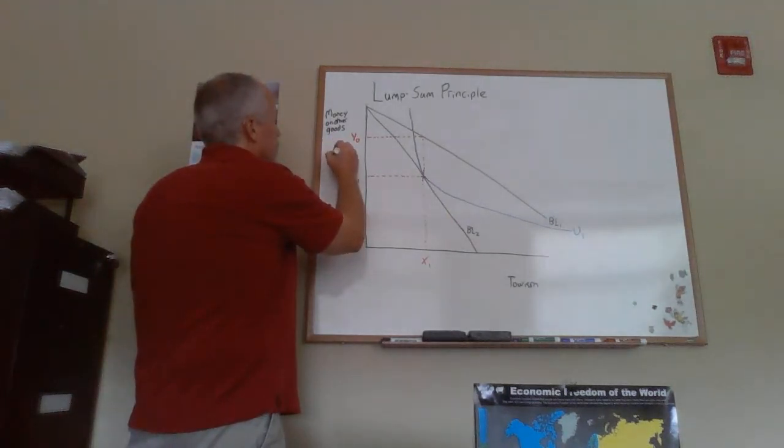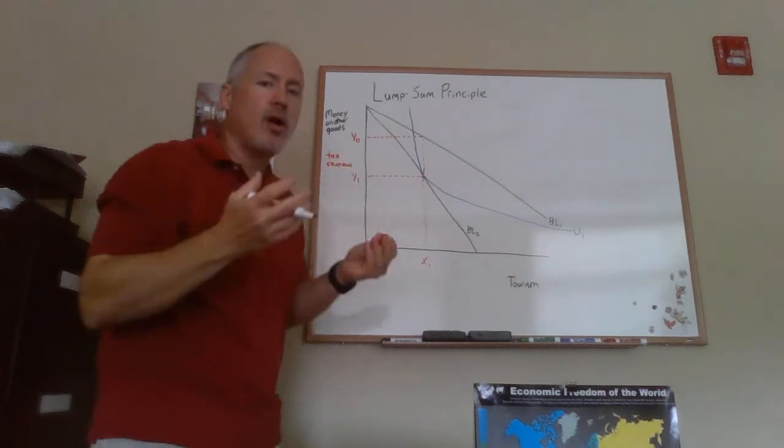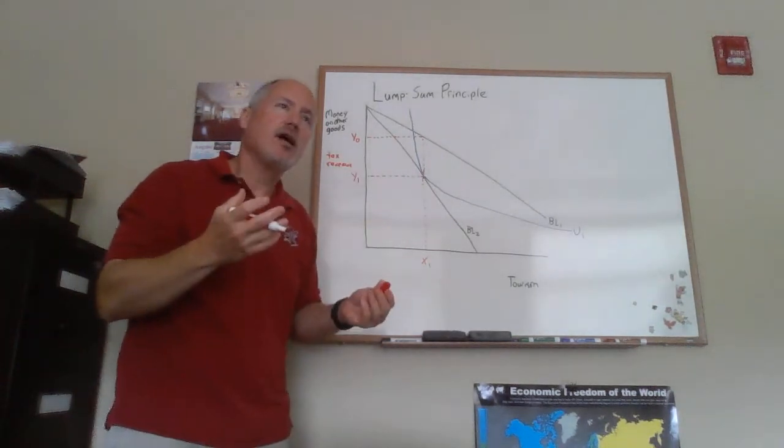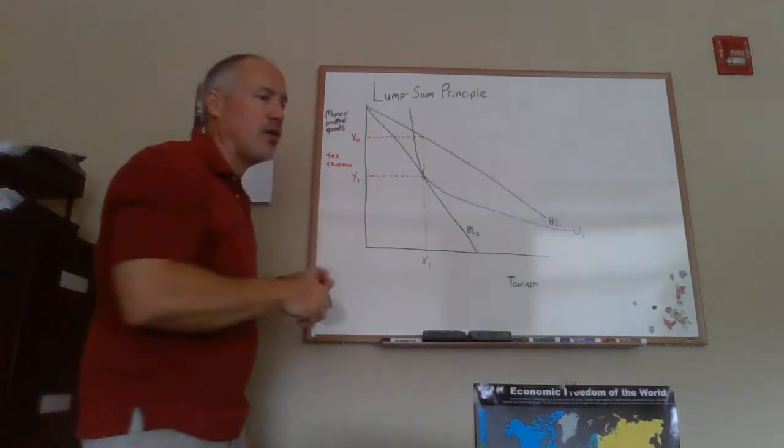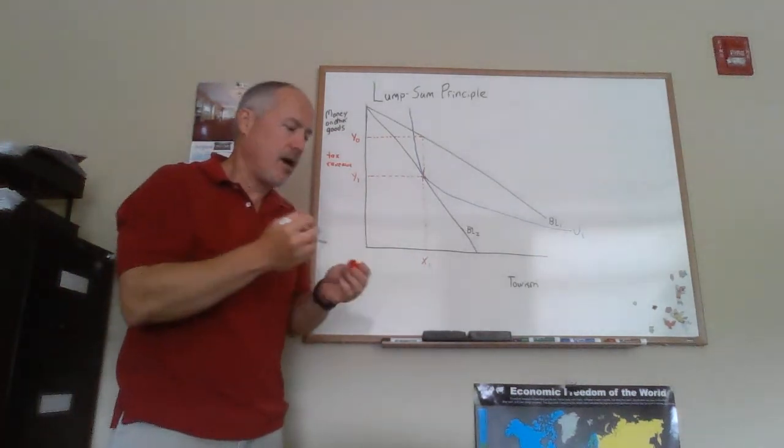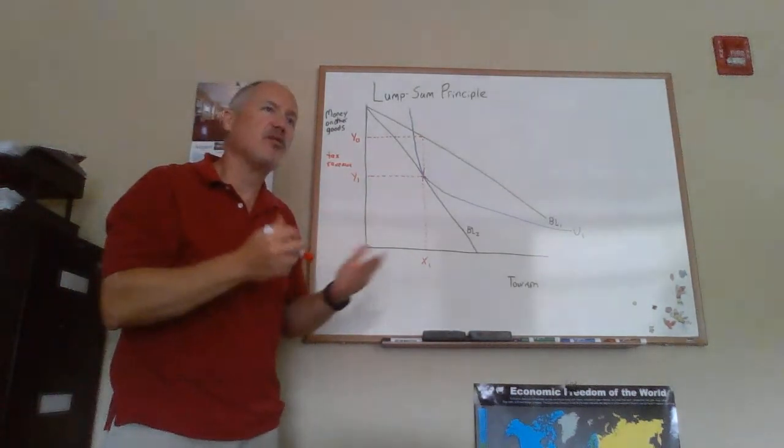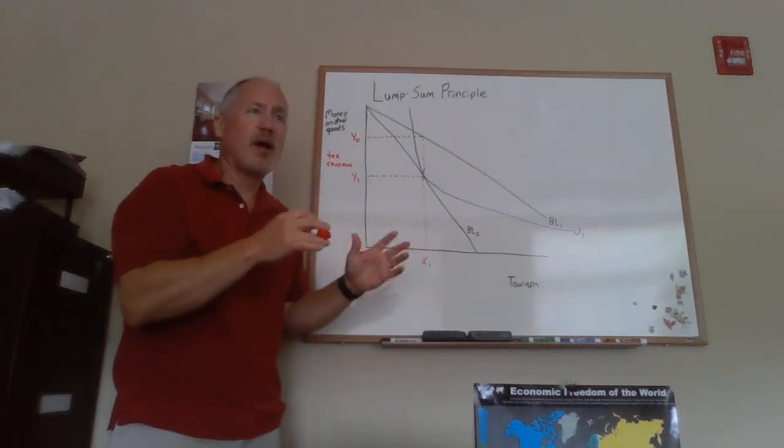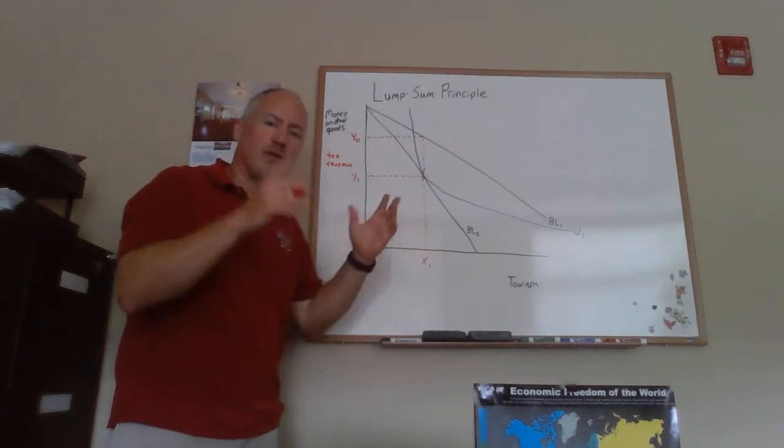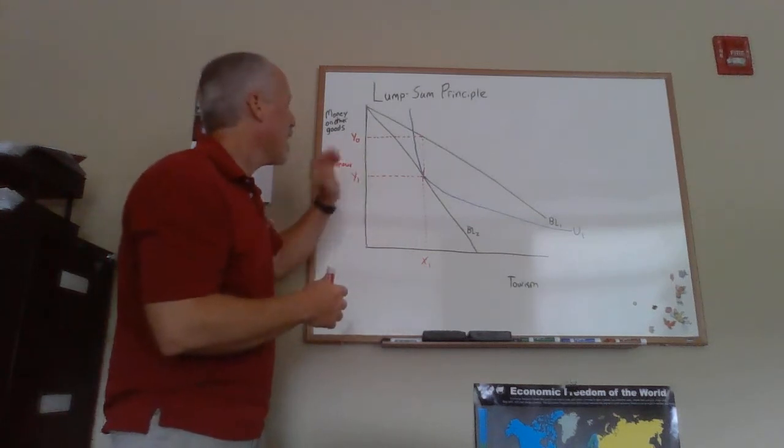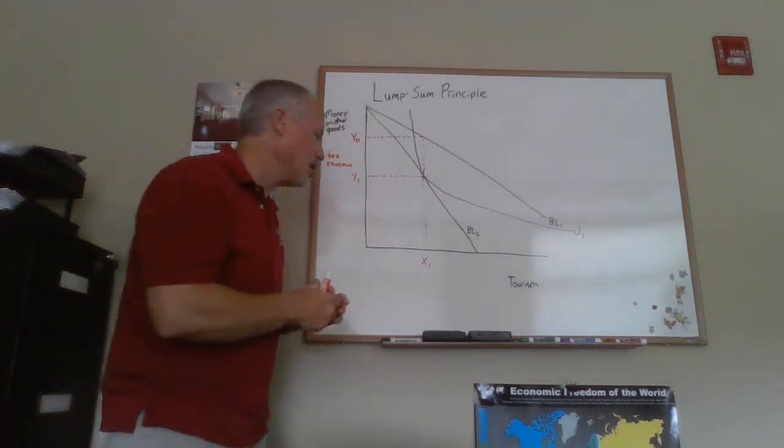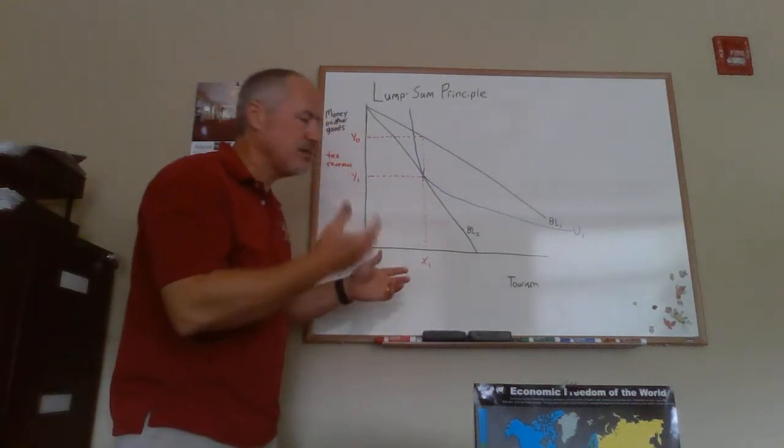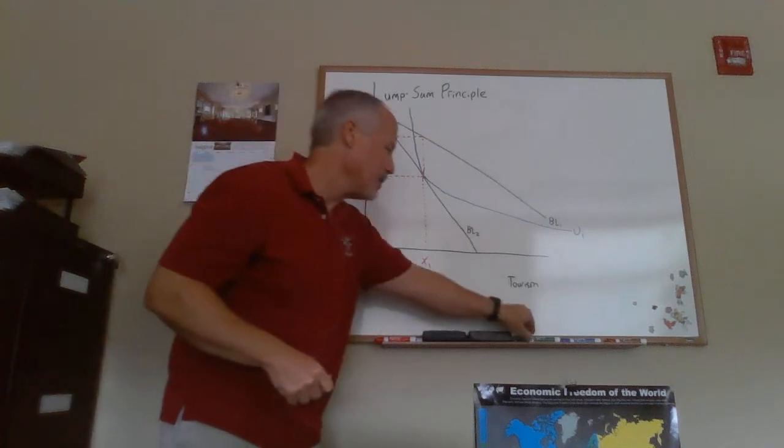If we want to look at an equivalent income tax, we'd want to have an income tax that's going to take this amount of revenue from our consumer here. That doesn't mean we're doing that just to say for better or worse the government needs this revenue, or their politicians believe they need this revenue. We're going to compare two different ways to raise this revenue and argue that the lump sum or income tax would work better.